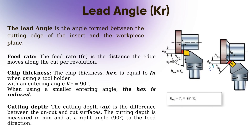Chip thickness is the process of thinning or thickening the chip depending on the lead angle of the cutting tool. As the value of the lead angle decreases, the cutting tool cuts from a wider surface. This allows for higher feed rate chip removal while improving the cutting tool life. However, it also leads to an increase in cutting forces.